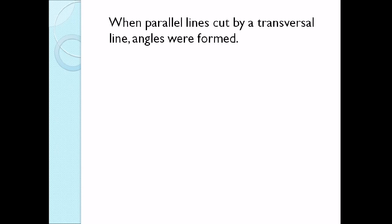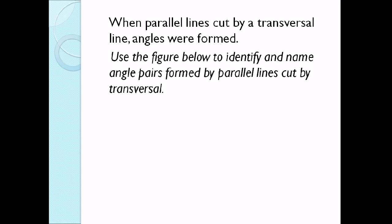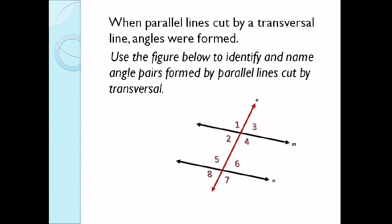When parallel lines are cut by a transversal line, angles are formed. Use the figure below to identify and name angle pairs formed by parallel lines cut by a transversal. The black lines M and N are the parallel lines, and the red line O is the transversal. We can name it: line M is parallel with line N, cut by line O. Notice that numbers 1 to 8 are the angles formed when the parallel lines are cut by the transversal.